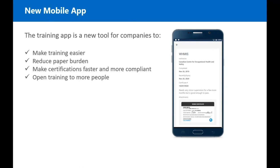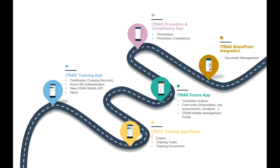From the training app, you'll be able to add certificates, view existing certificates, and see notifications. Phase one of the training app roadmap will include the ability to add certificates, Azure AD authentication — the same authentication added in 4.15 — support for MFA, the new iTrack mobile API, and alerts.